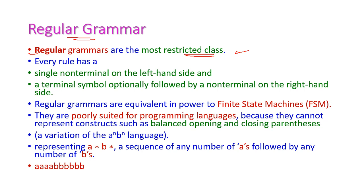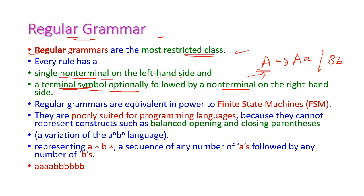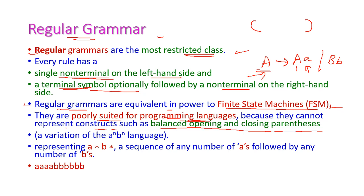Regular grammar. These grammars are the most restricted class. Every rule has a single non-terminal on the left hand side and a terminal symbol optionally followed by a non-terminal on the right hand side. For example: A → a A, A → a B, B → b. This is a sample regular grammar — left hand side only a non-terminal and right hand side a terminal followed by an optional non-terminal. Regular grammars are equivalent to finite state machines and they are poorly suited for programming languages because they cannot represent constructs such as balanced opening and closing parentheses.